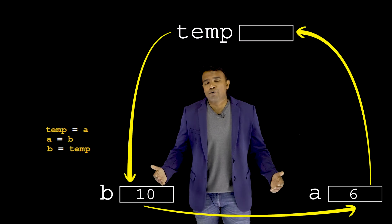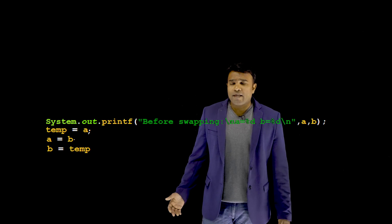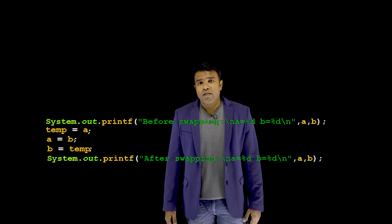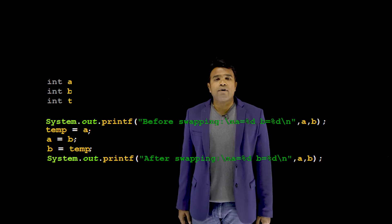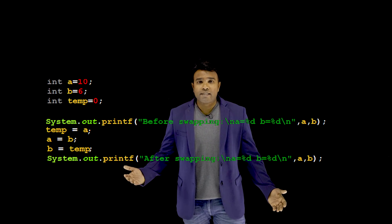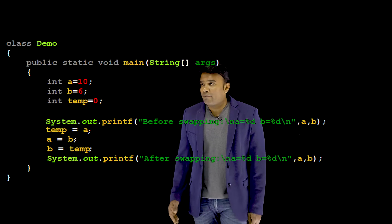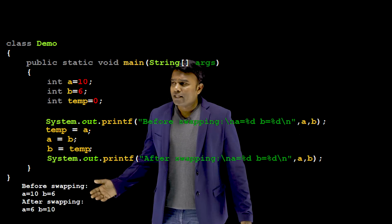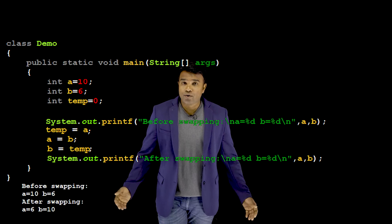Before swapping, I would like to print the original values, and after swapping I would like to print again, in order to check if the values are really swapped. For the program to work, I have to create the required variables. All of this I will enclose within the main, and the main is enclosed within the class. When I execute this, here is the output — it goes to show that this is the simplest possible logic for swapping.